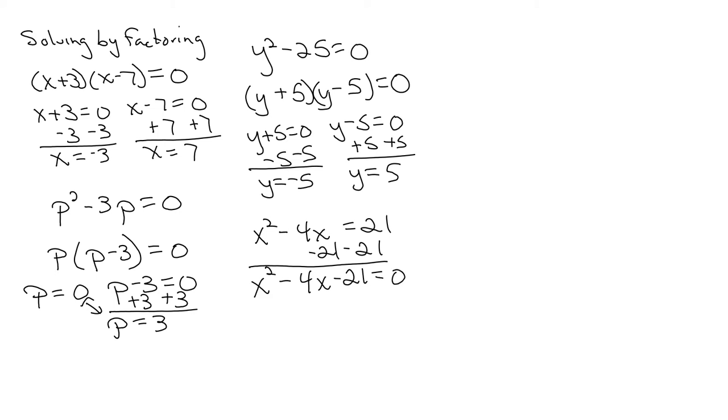Now that it's set equal to 0, let's factor. We have x and x, factors of 21 that get us to 4, 7 and 3, opposite signs, bigger factor negative. Set our factors equal to 0, 0.